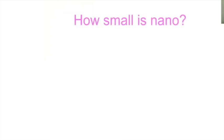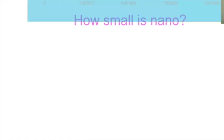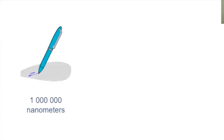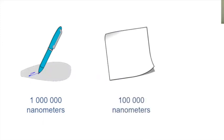How small is nano? We know that the standard measurement of length is a meter, so a nanometer is a billionth of a meter. To give you a brief comparison, the tip of a pen is about a million nanometers wide. The thickness of a sheet of paper is about 100,000 nanometers wide.